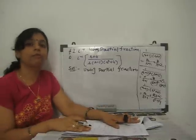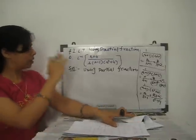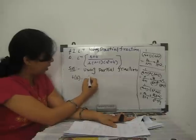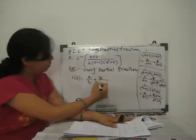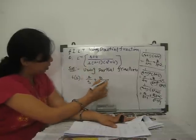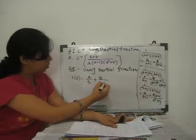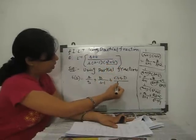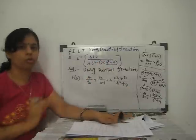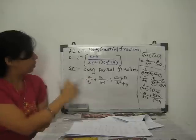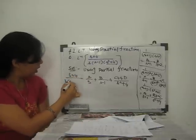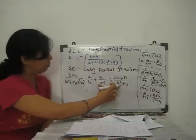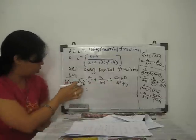Now let's see how we solve an inverse Laplace transform using partial fractions. We take F(s) = (s+4) / [s(s−1)(s²+4)]. We write this as A/s + B/(s−1) + (Cs+D)/(s²+4). Taking the LCM, the denominator s(s−1)(s²+4) cancels out, leaving us with the numerator equation to solve.